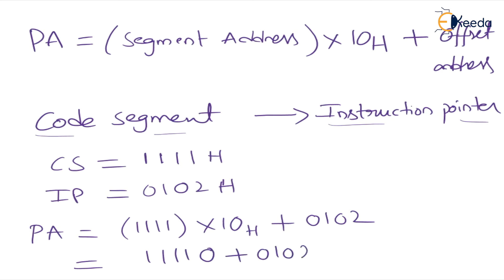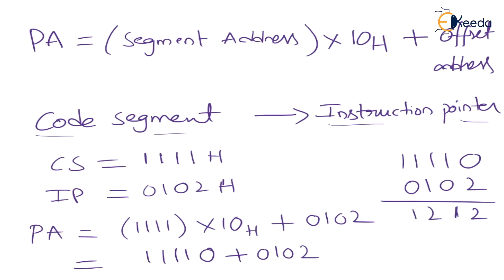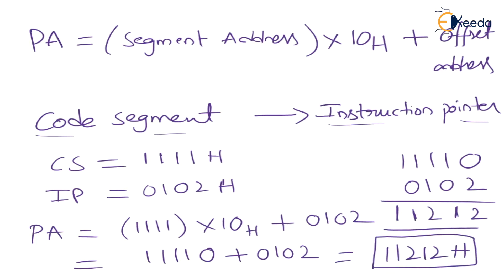Appending a zero gives 11110H, then add 0102H. So: 11110 plus 0102 equals 11212H. The physical address is 11212H. What is the size of this physical address? It is 20 bit.